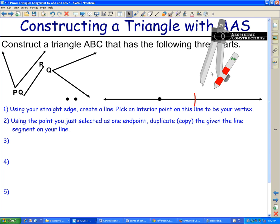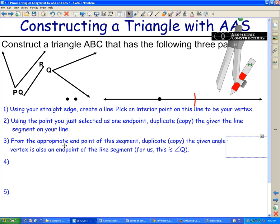Next up, I need to start talking about these angles a little bit. Step 3 says, from the appropriate endpoint of the segment, duplicate the given angle whose vertex is also an endpoint of the line segment. Now, my two endpoints of the line segment I just copied were Q and R. And I think what is important to realize is that we don't have an angle R.